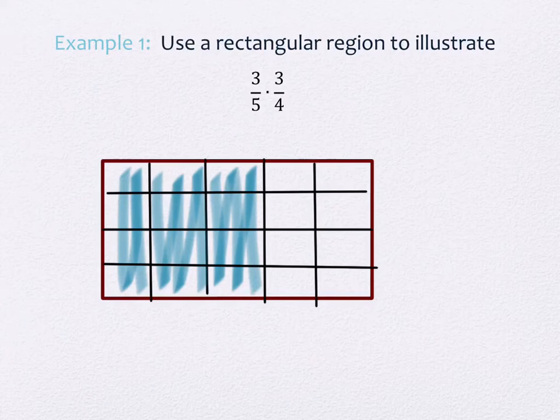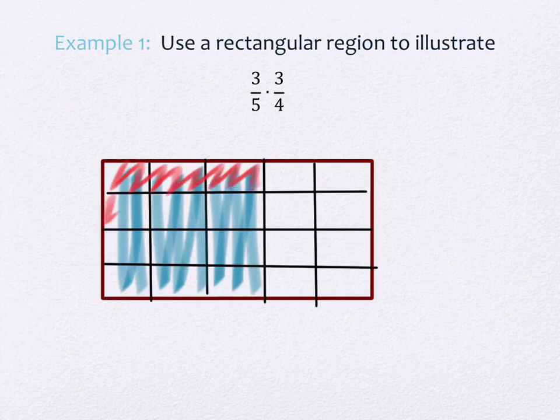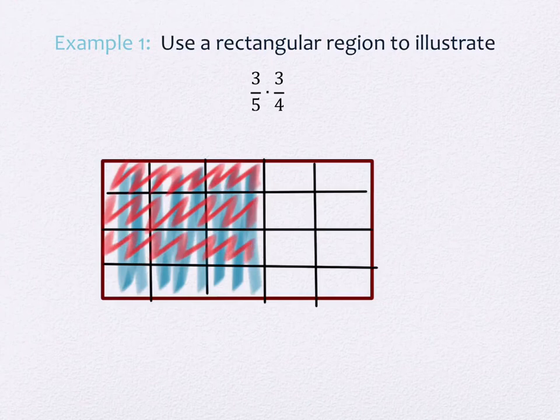Of the horizontal pieces, I'm going to shade in three of them. This is one, this is two, and this is three. So three of the four horizontal pieces are now shaded in.